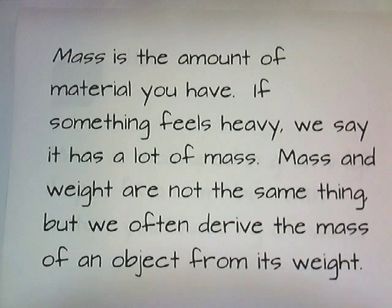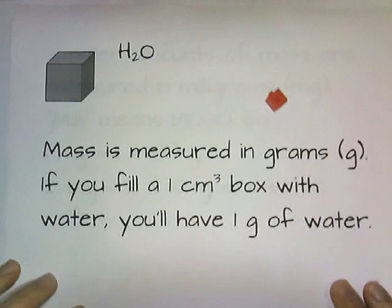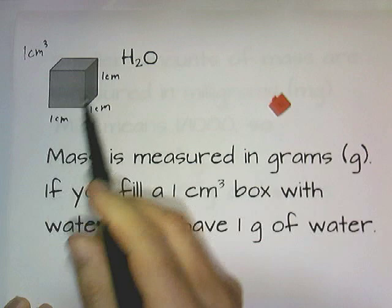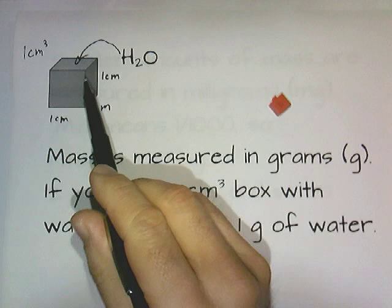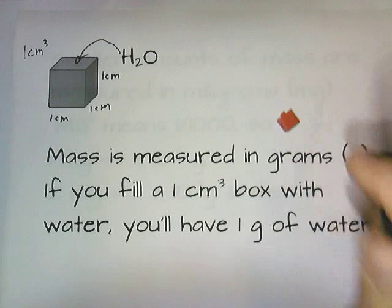If you really want to know the formal definitions of mass and weight, you'll have to take physics. For right now, we'll say that weight and mass are kind of similar but not really the same thing. The way they figured out a unit of mass is they took a tiny box — one centimeter by one centimeter by one centimeter, so one cubic centimeter — and filled it with water. The mass of water in this one cubic centimeter box is defined as one gram. That's how we came up with the idea of what a gram is.